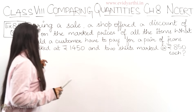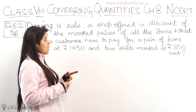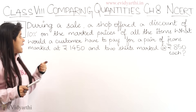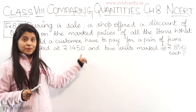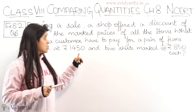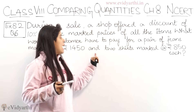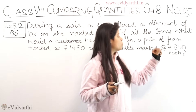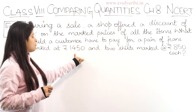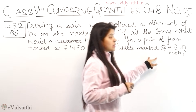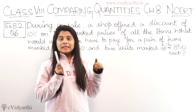What would a customer have to pay for a pair of jeans marked at rupees 1450? A pair of jeans marked at rupees means that is the original cost, so after discount what will happen? And two shirts marked at rupees 850 each. We have to find the total price of one pair of jeans and two shirts after discount.